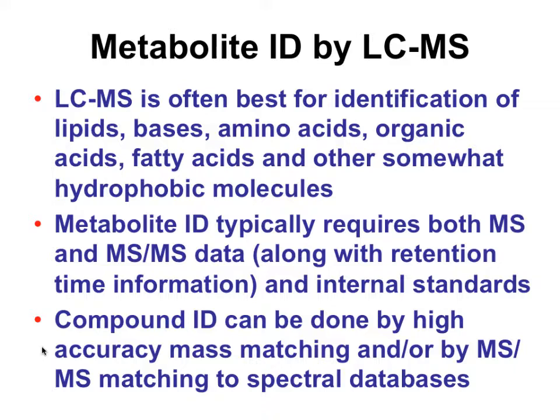LC-MS, which differs from GC-MS, is usually better for things like lipids and hydrophobic molecules. People have been quite successful for larger compounds — you can see bases, amino acids, some things that aren't so obvious for GC-MS. To do the identification properly you need MS data, ideally MS-MS data, retention time information, and ideally an authentic standard or internal standard. What people still continue to do — and I'll show you how, but don't recommend it — is mass matching to figure out what's there. At least it gives you more than nothing, but it's not something to hang your hat on.